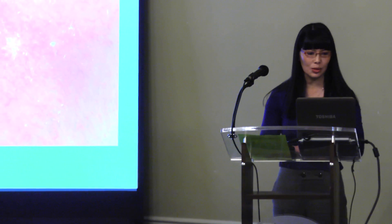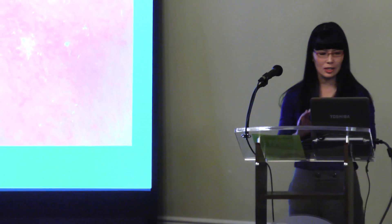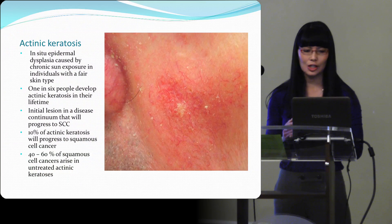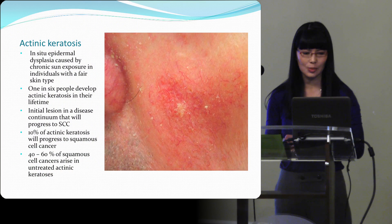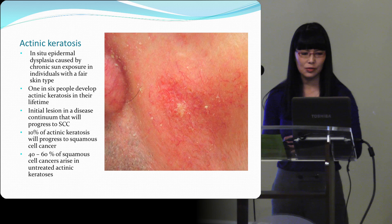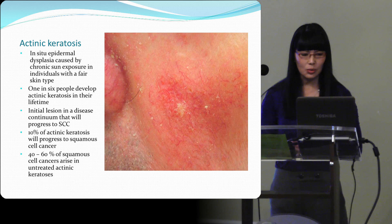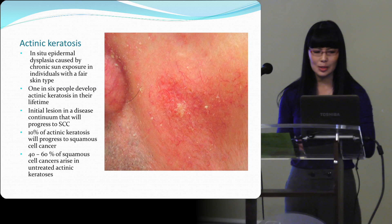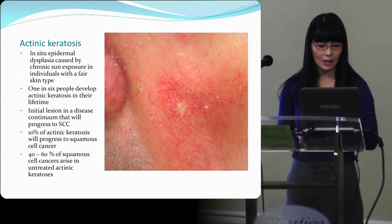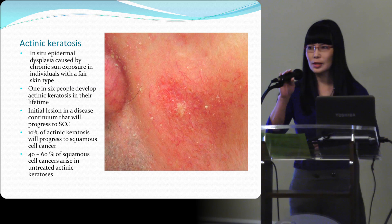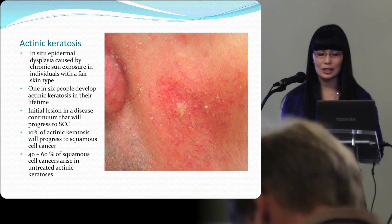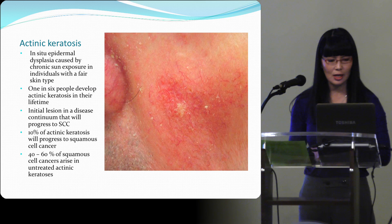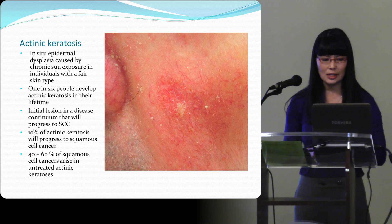We're here to talk about actinic keratosis. The definition is in situ epidermal dysplasia caused by chronic sun exposure in an individual with fair skin type. One in six people develop actinic keratosis in their lifetime, and more and more we're considering it the initial lesion — some people even consider it a cancerous lesion and a disease continuum.